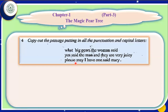Come to the third line: 'Please, may I have one.' Sentences starting with 'please' — P will be capital. After 'please', comma. 'May I have one' — this whole phrase will be in inverted commas. After 'one', there will be a comma. Said Mary — M for Mary will be capital because it is a name. At the end, there will be a full stop.